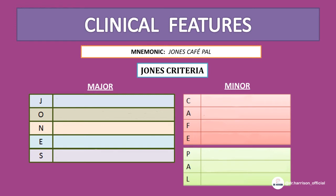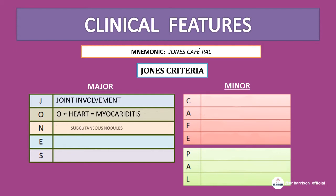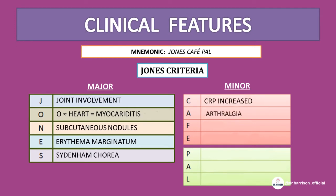Major criteria: J stands for joint involvement, O (looks like a heart) stands for carditis, N stands for nodules, E stands for erythema marginatum, S stands for Sydenham's chorea. Minor criteria: C for C-reactive protein elevation, A for arthralgia, F for fever, E for elevated ESR, P for prolonged PR interval, A for ASO titer, L for leukocytosis.